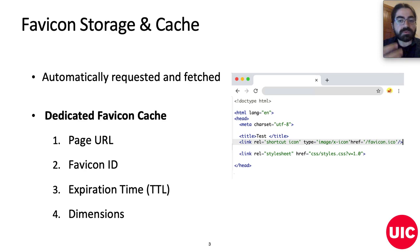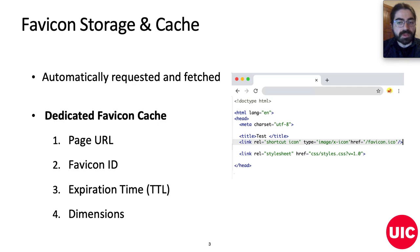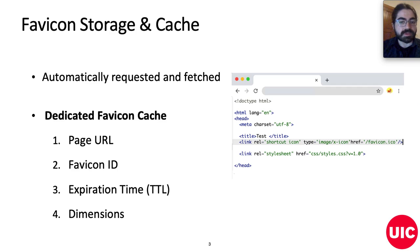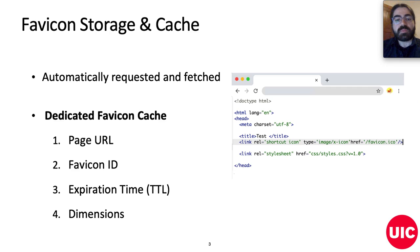When a browser loads a website, it automatically issues a request in order to look up for the favicon. The favicon is stored in the header of the HTML web page inside the rel tag. This attribute tag is responsible for creating the relationship between the icon resource and the page. Similar to other resources that the browser needs to access fast, favicons are independently stored in a dedicated favicon cache.